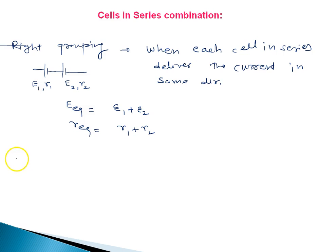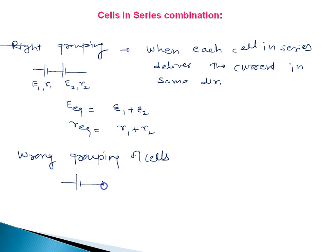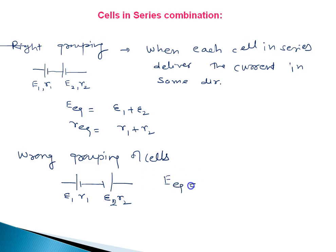Now I will discuss the wrong grouping of cells, which appears in some numericals. Suppose the first cell is connected to the second cell such that negative meets negative — there is a chance of short circuiting. Here EMF is E1 and E2, resistances are R1 and R2. If E1 is more than E2, the net EMF is E1 minus E2. If E2 is more than E1, it is E2 minus E1.